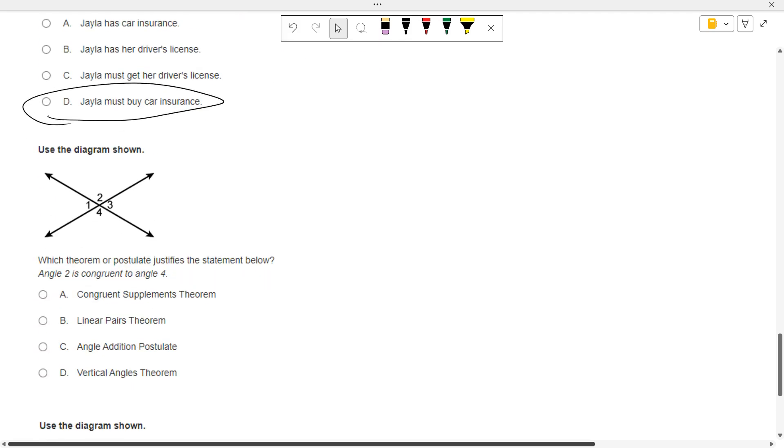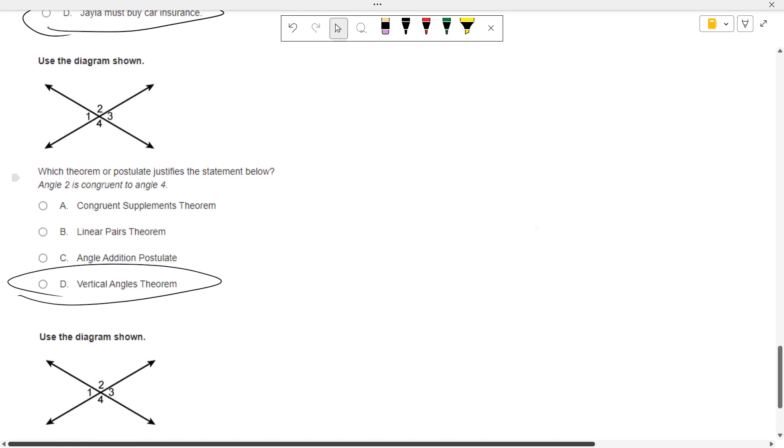Okay. Angle 2 is congruent to angle 4. Why? They are vertical angles. The vertical angles theorem says that they are congruent.